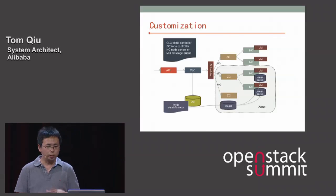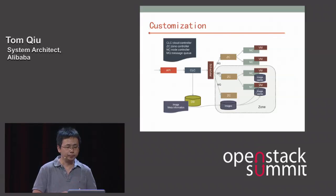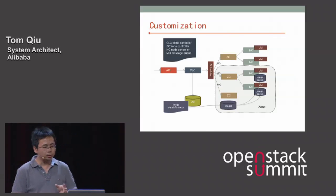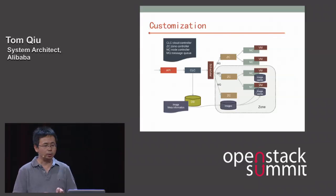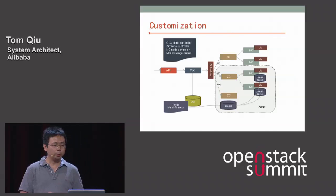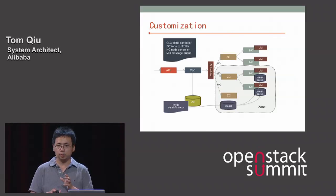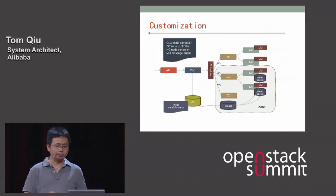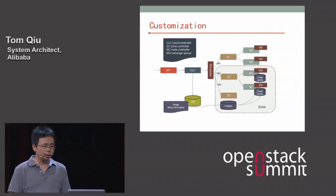To address transfer efficiency, we built a layered cache system. We maintain image metadata in the core database and deploy caches in each zone and on each physical server. When an instance needs to launch, the node can retrieve the image from its own local cache, eliminating transfer time. Since there are only a few images, pre-caching all of them is feasible.